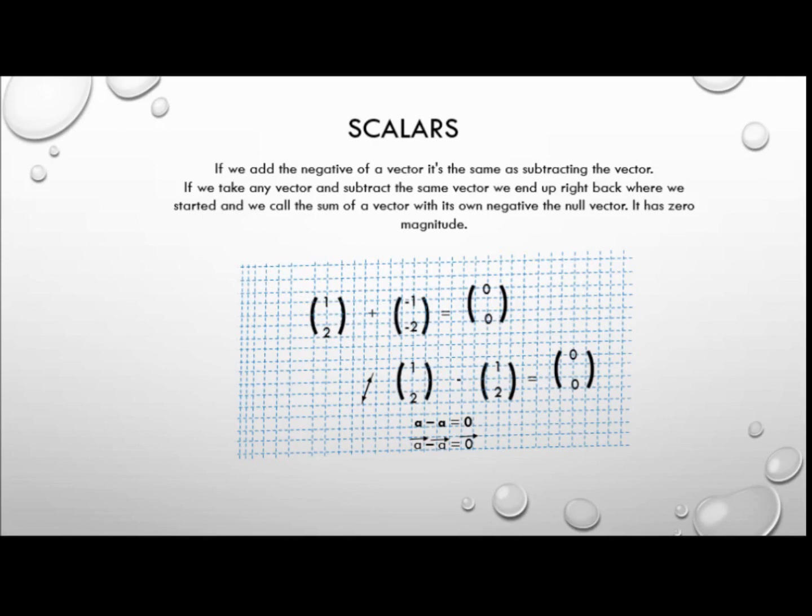Now if we add negative of a vector to itself we can end up right back at the place where we started. Because the two vectors are exactly the same length. So if we take that vector and then we flip it and then we add it to itself we're right back to the very same point. And we call that the null vector or the zero vector.